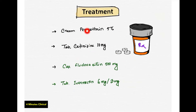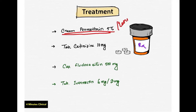Scabies treatment is very interesting. The main drug is Permethrin 5% cream, which is available as Loryx or Scab-Ax — 5% formulations from pharmaceutical companies. This is the first-line topical treatment for scabies.